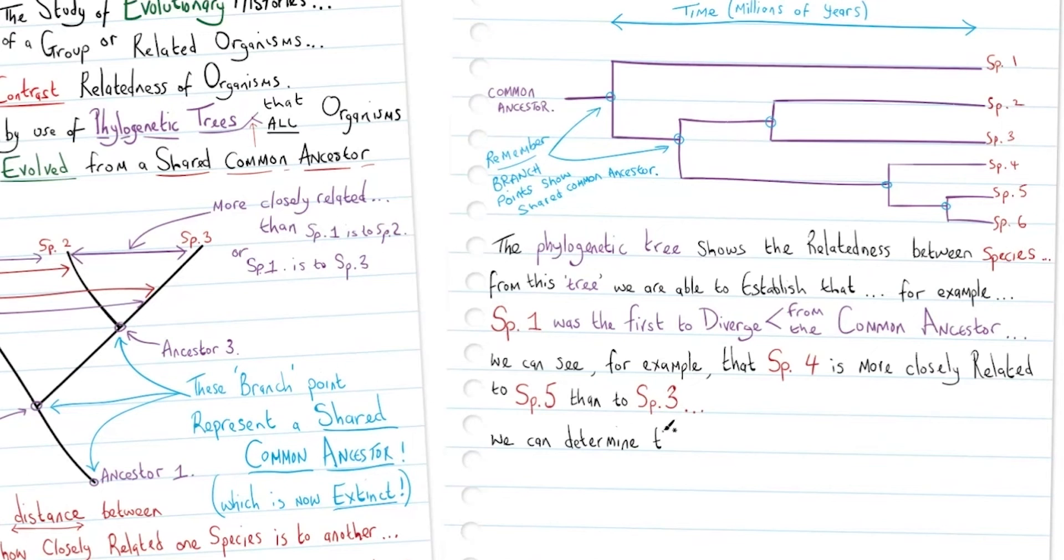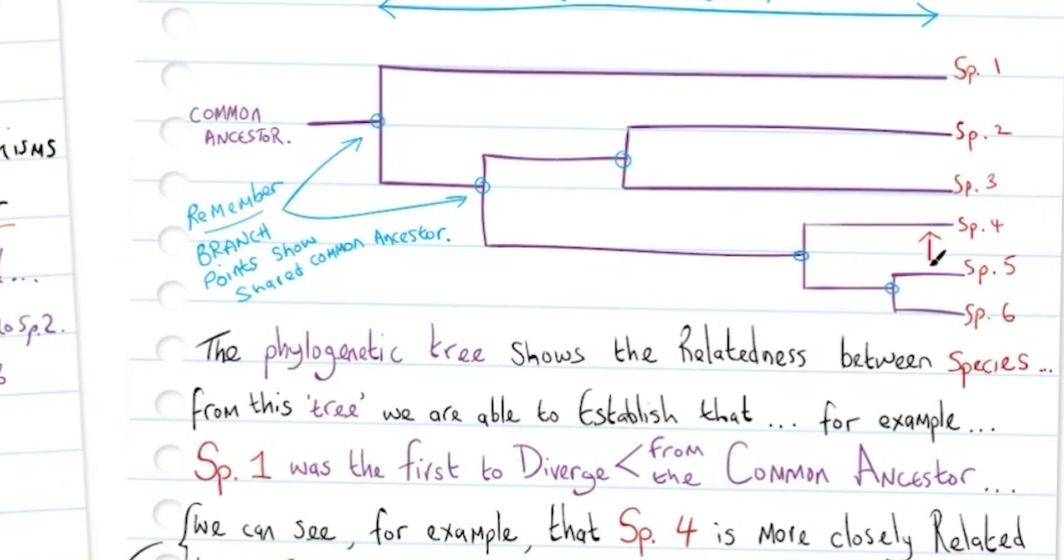Often in exam questions they expect you to be able to read these phylogenetic trees. For example, if we consider that species 4 is more closely related to species 5 than it is to 3, we indicate that on the phylogenetic tree and look at the distance between the branches.